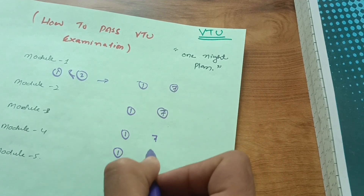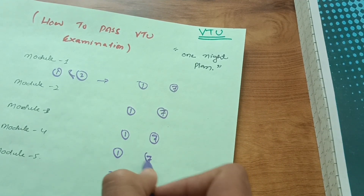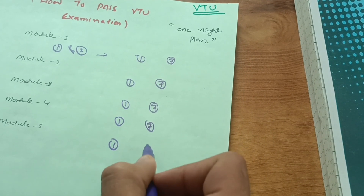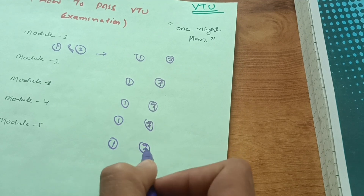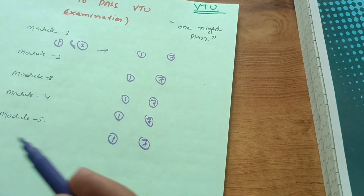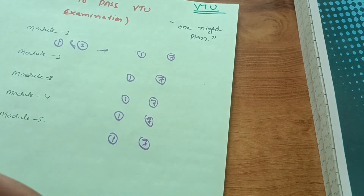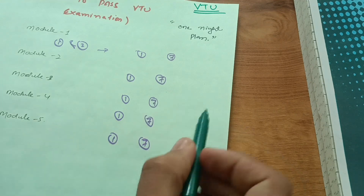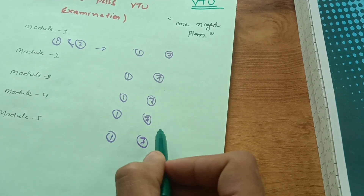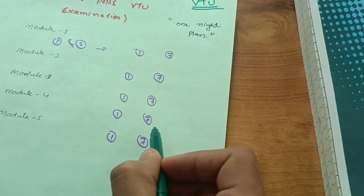So that's seven marks, seven marks, and seven marks across the modules. If you calculate, these are 35 marks. As you already know, 35 is the passing marks in the VTU examination. But it is not enough to just write these 35 marks and expect to get exactly 35 — that's not definitely possible.